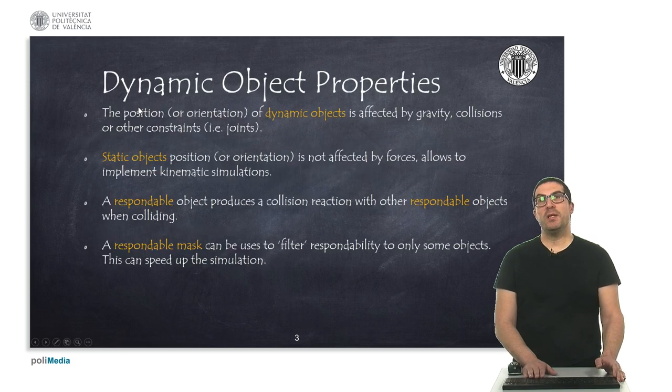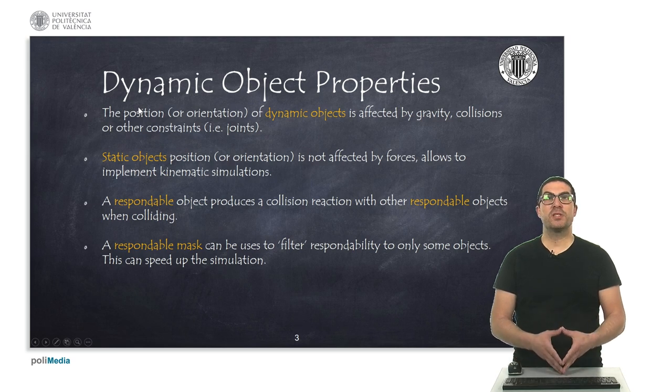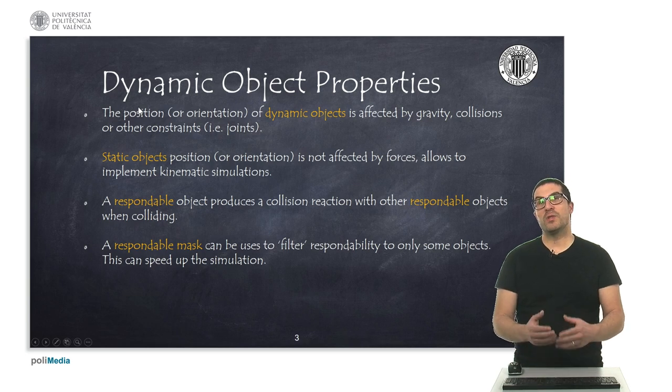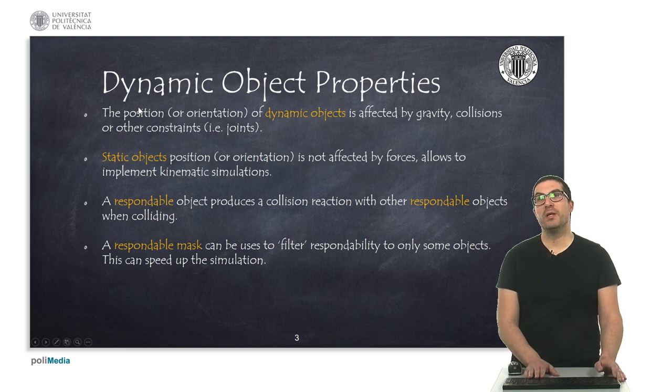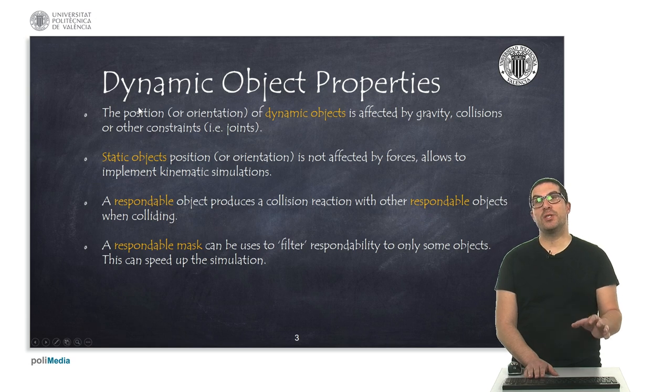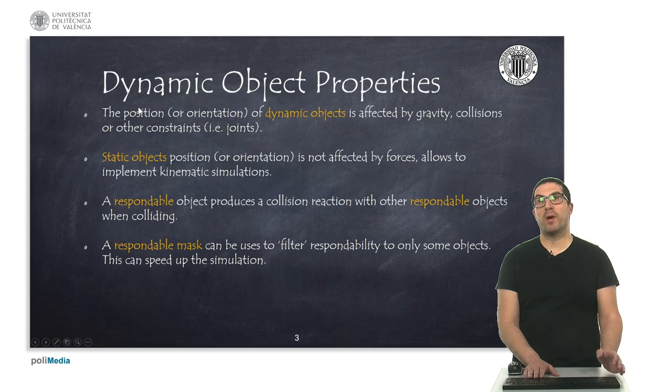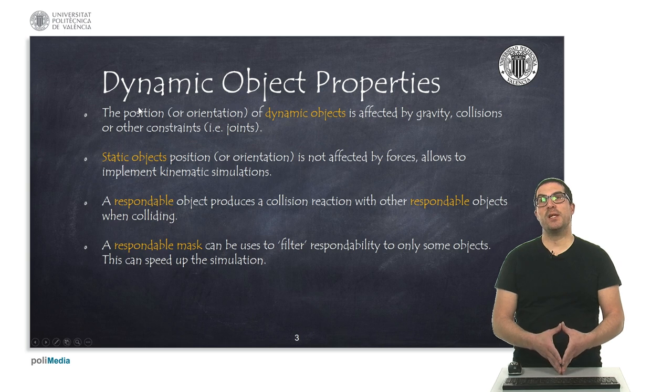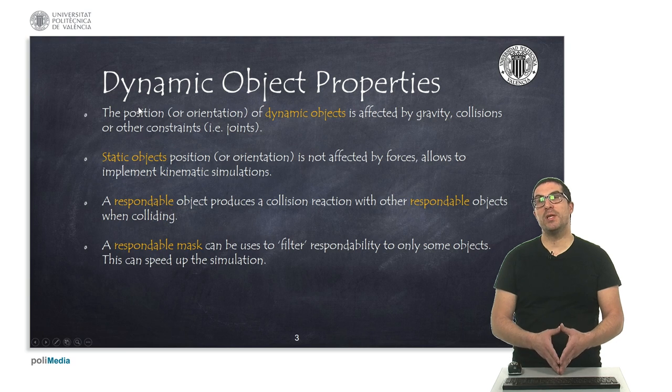So objects can be dynamic or static. A dynamic object is affected by forces such as gravity, collisions between objects, and other restrictions such as joints. On the contrary, a static object can modify its position or orientation only if we modify it manually or by code through programming, but they do not depend on these forces. So they basically allow us to implement purely kinematic simulations, which are more easy to understand.